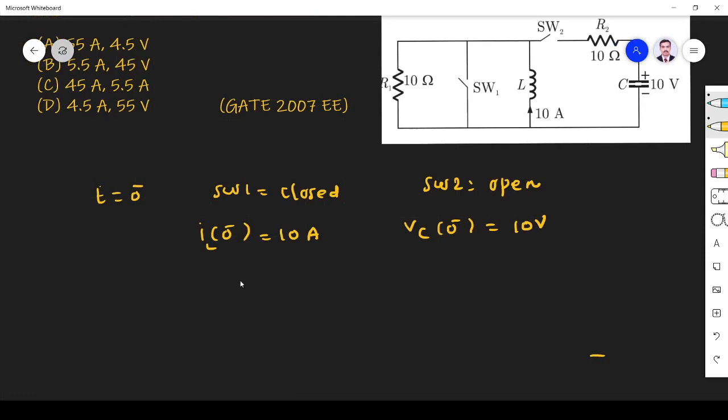We know that inductor and capacitor cannot change current and voltage instantaneously. So at T equals 0 plus, I_L(0+) will be equal to 10A and V_C(0+) is also 10V, because inductor cannot change current instantaneously and capacitor cannot change voltage instantaneously.